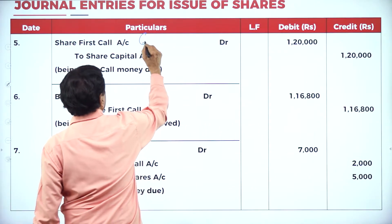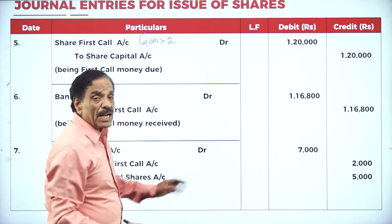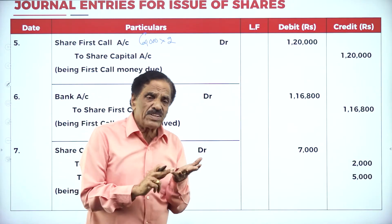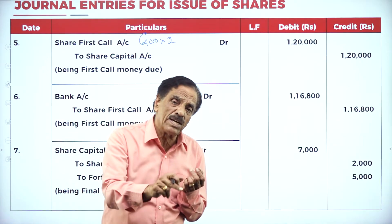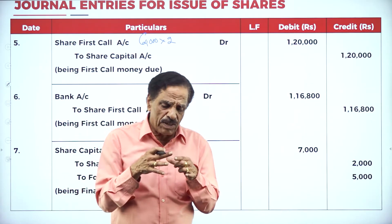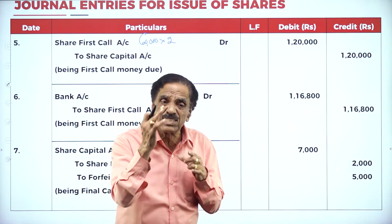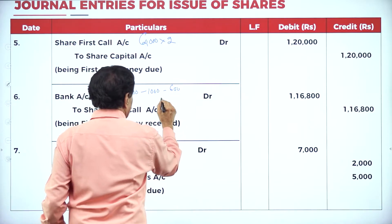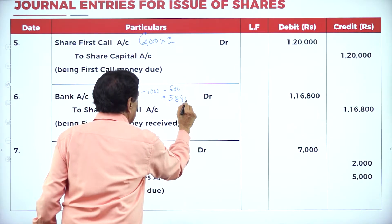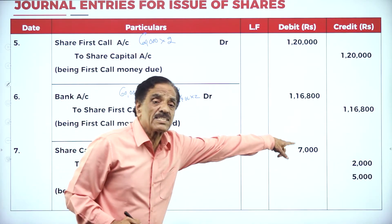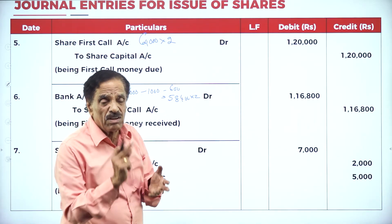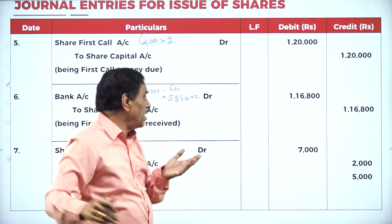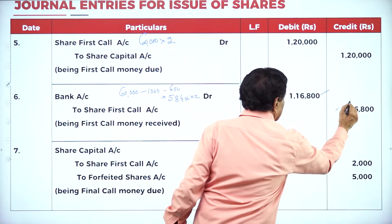First call entry: Share First Call Account Dr. 60,000 × 2 = 1,20,000 to Share Capital Account 1,20,000. However, the first shareholder (1,000 shares) and second shareholder (600 shares) fail to pay the first call — 1,600 shares defaulted. So actual receipt: 60,000 − 1,000 − 600 = 58,400 shares × 2 = 1,16,800 received.